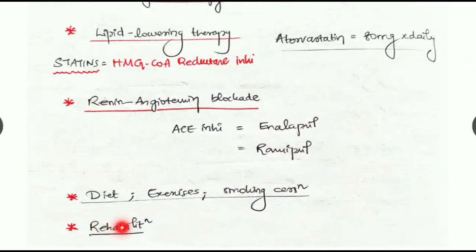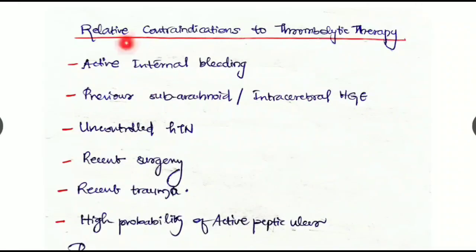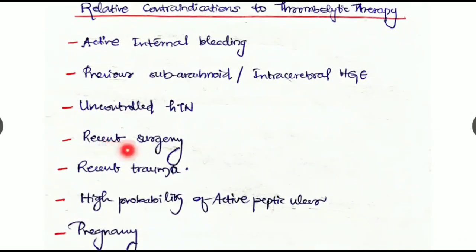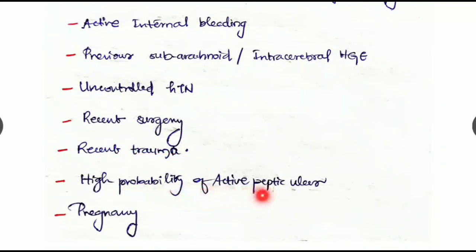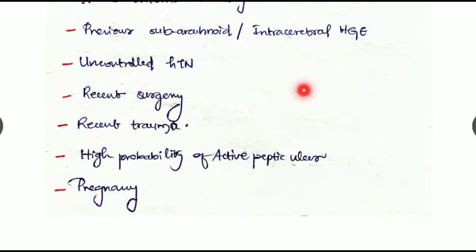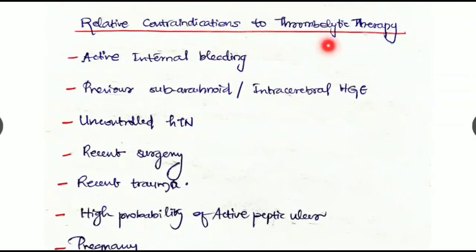Followed by rehabilitation of the patient. Which are the relative contraindications to the thrombolytic therapy? If there is an active internal bleeding, if there is a previous subarachnoid or intracerebral hemorrhage, if there is uncontrolled hypertension, if there is a recent surgery or any recent trauma, if there is high probability of active peptic ulcer, or if there's pregnancy. If we are giving thrombolytic therapy, then the patient goes for hemorrhage and severe internal bleeding followed by shock and death.